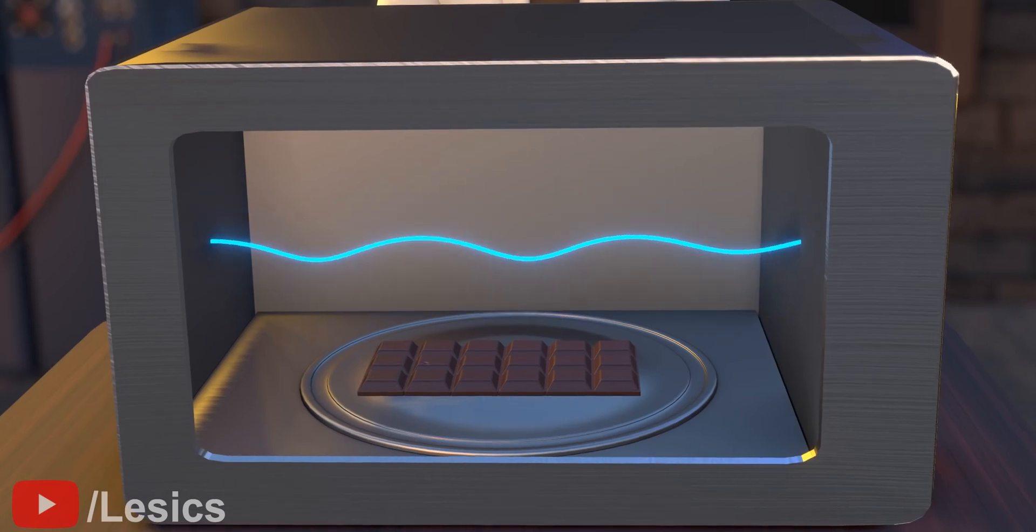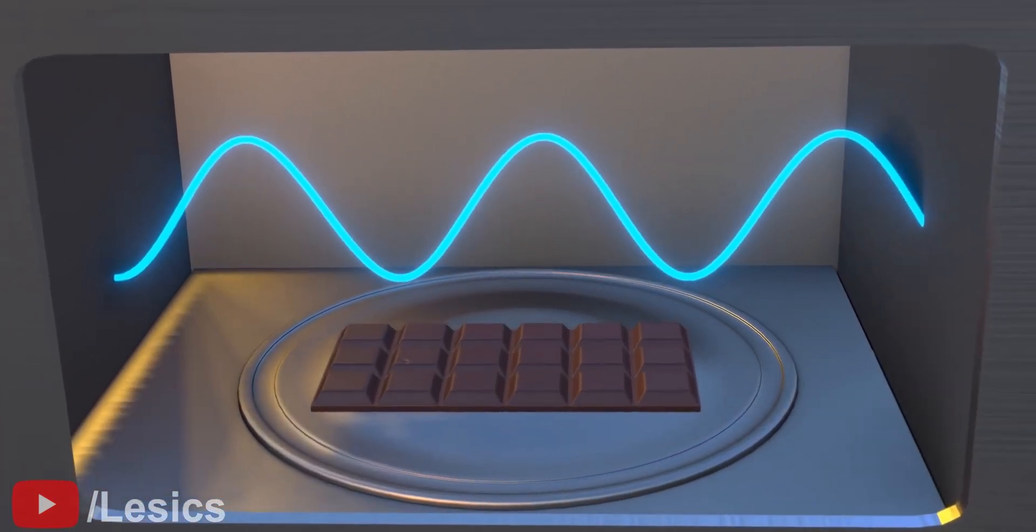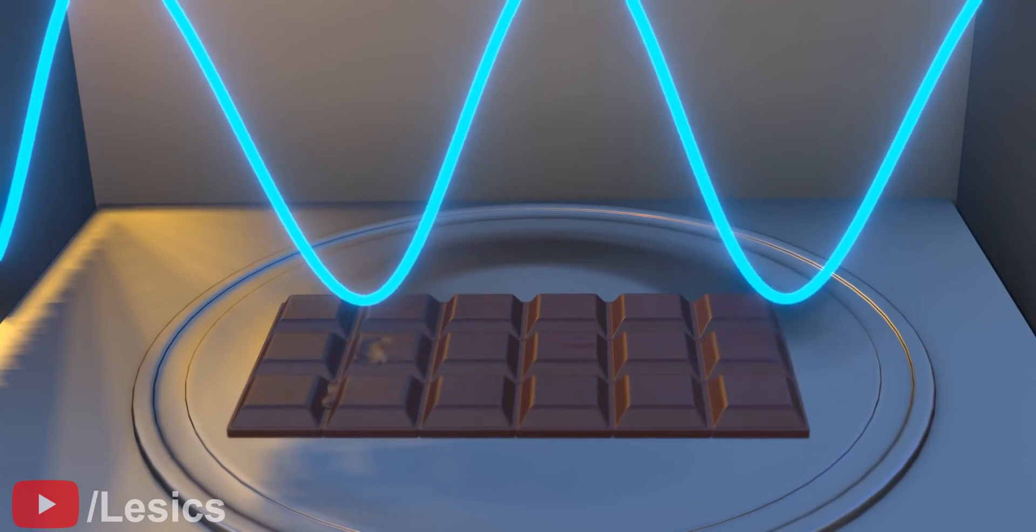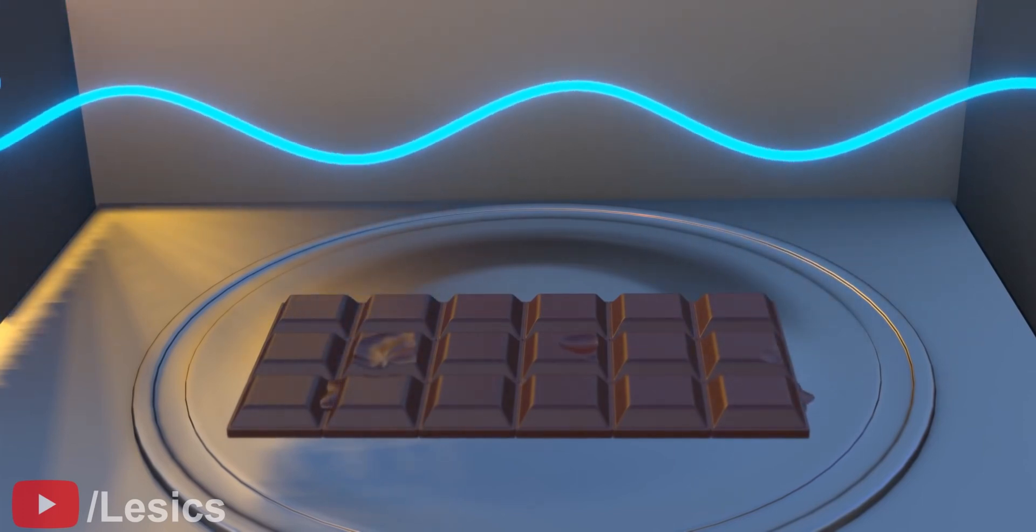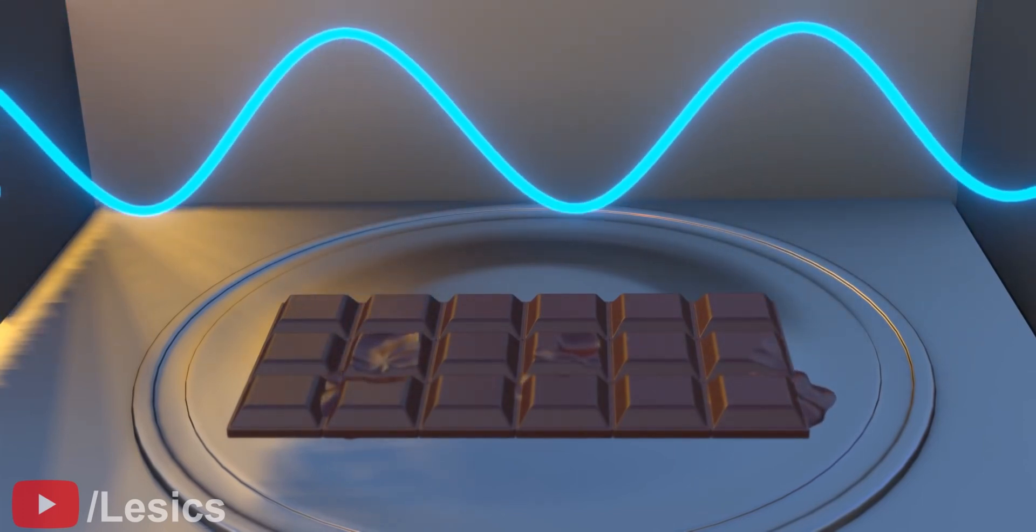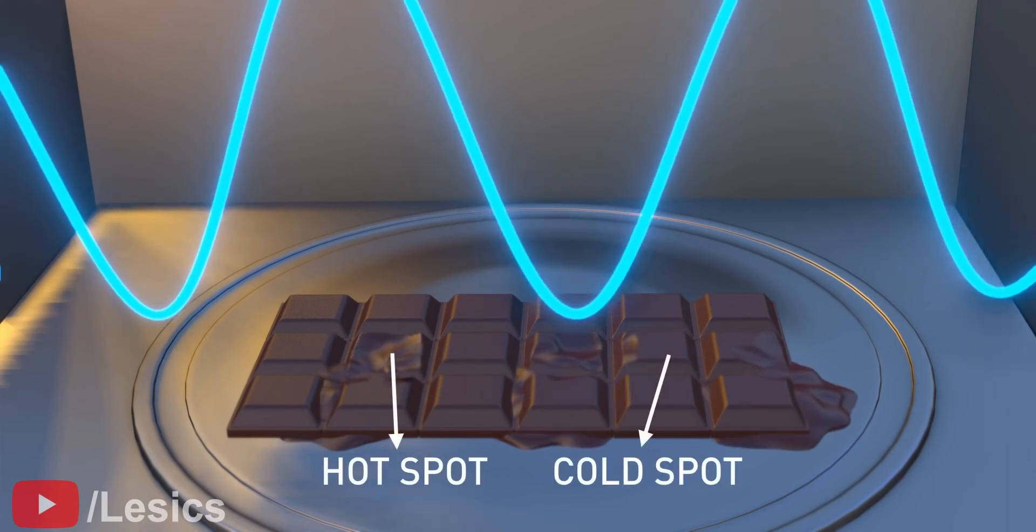It is clear from this visual that some points of the standing wave are at high energy intensity, and some other points are at zero intensity. Due to this, there would be many spots in a microwave, some cold and others hot.